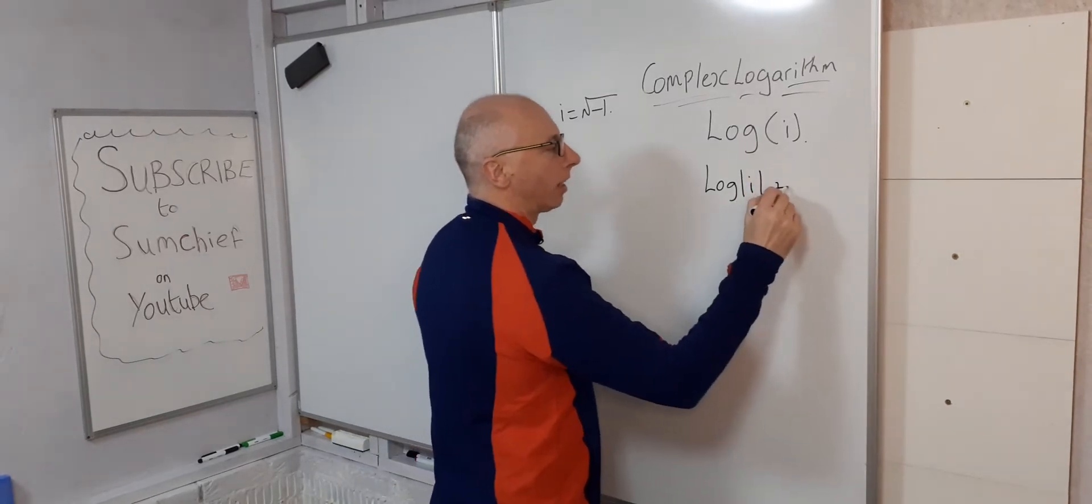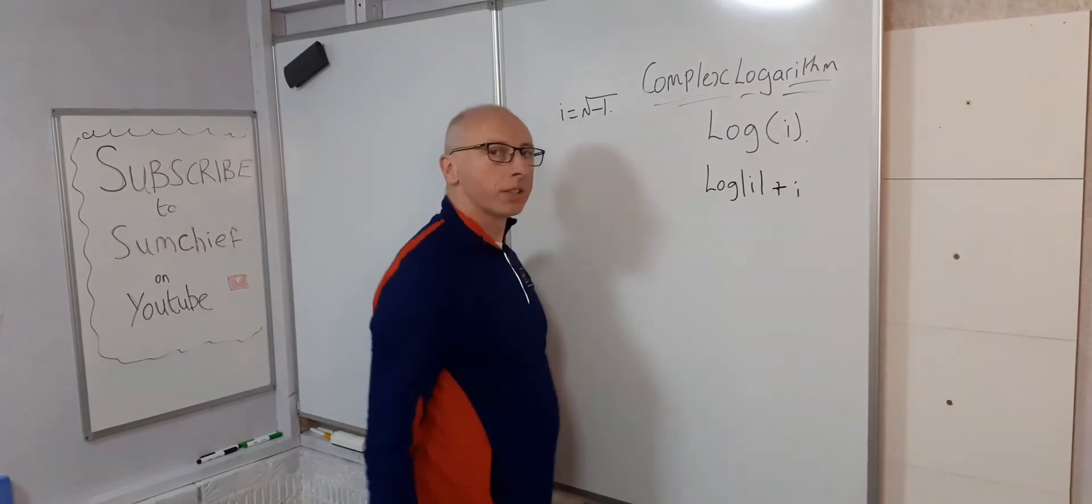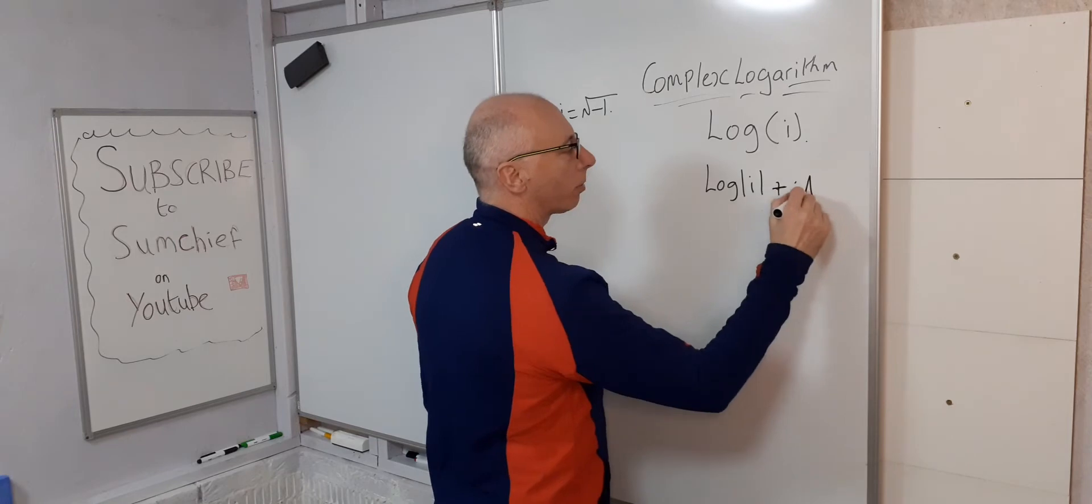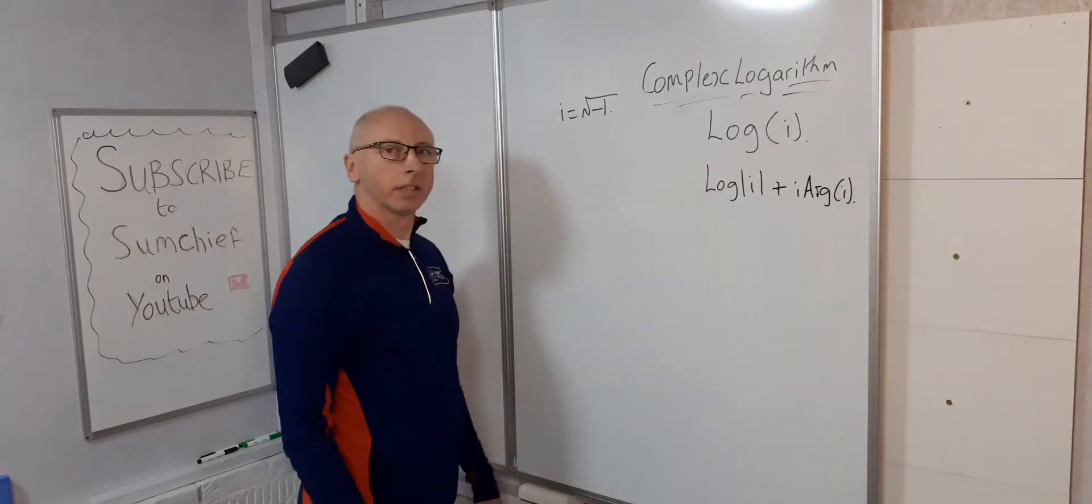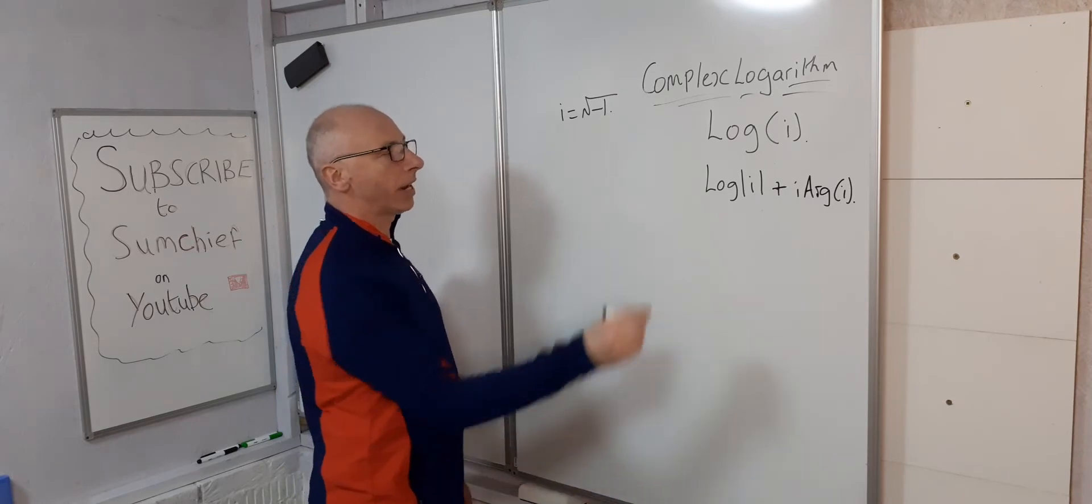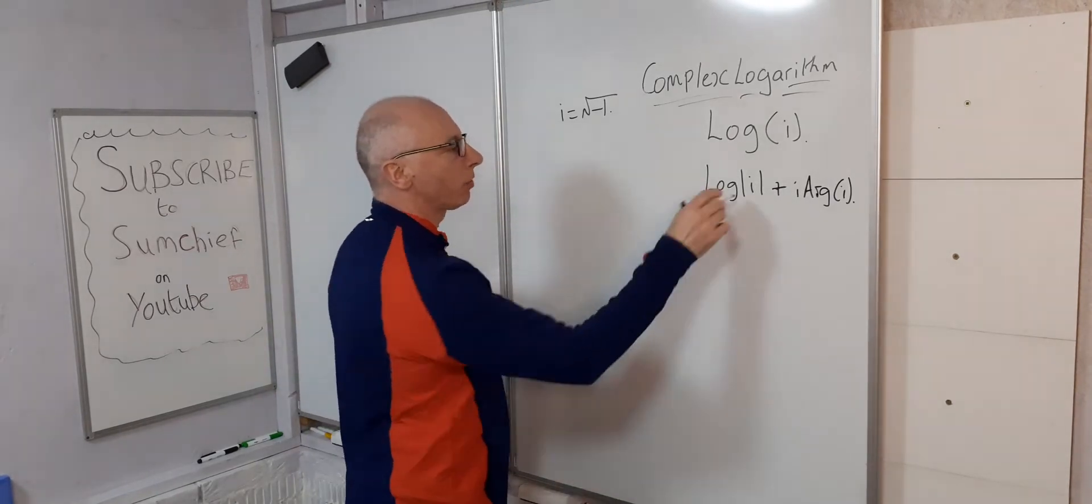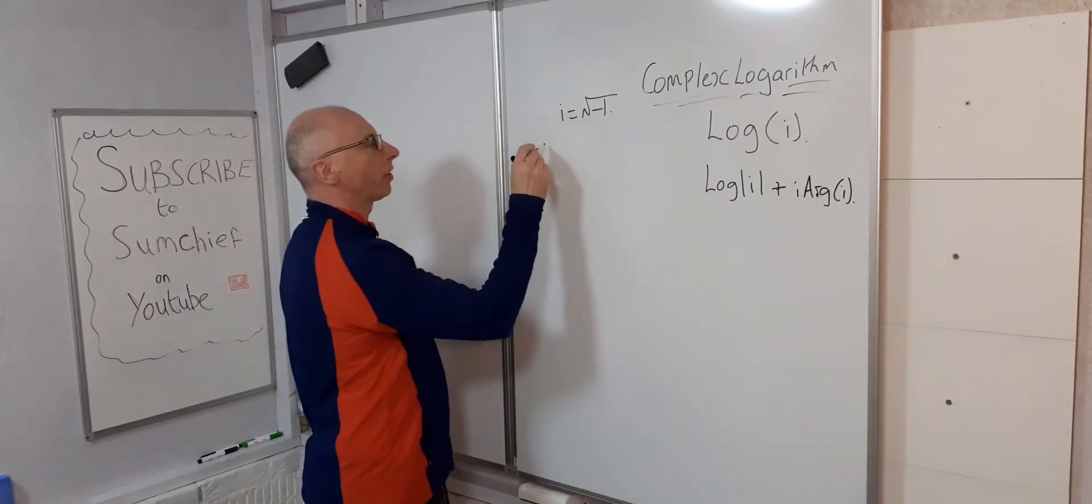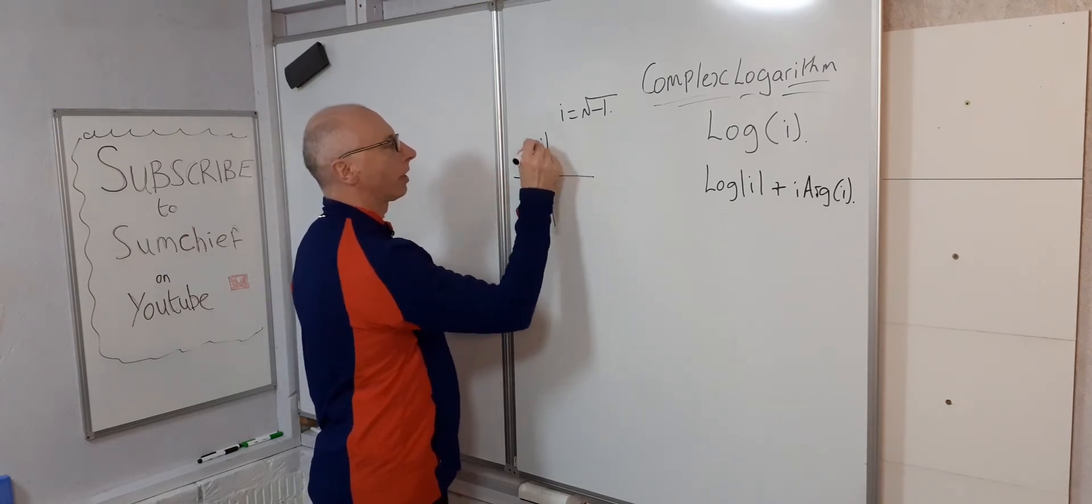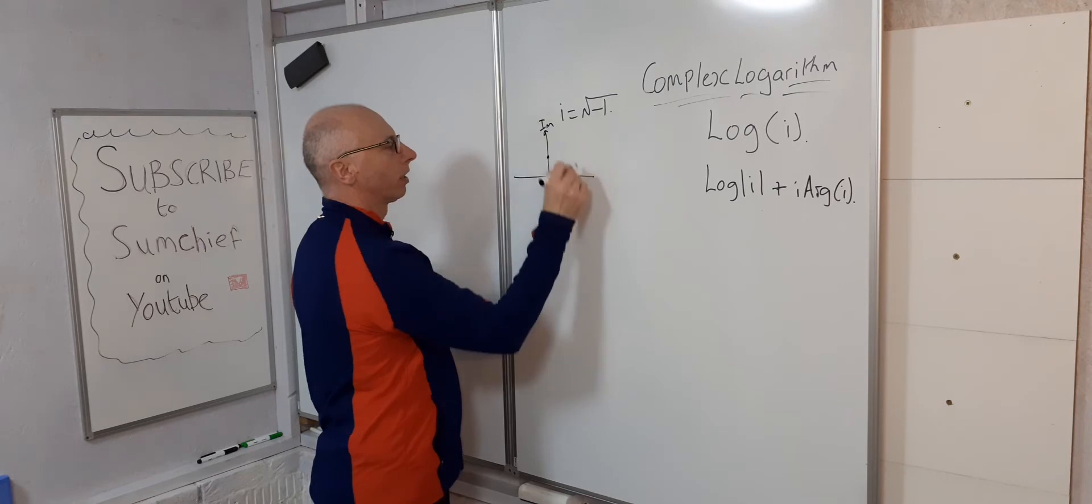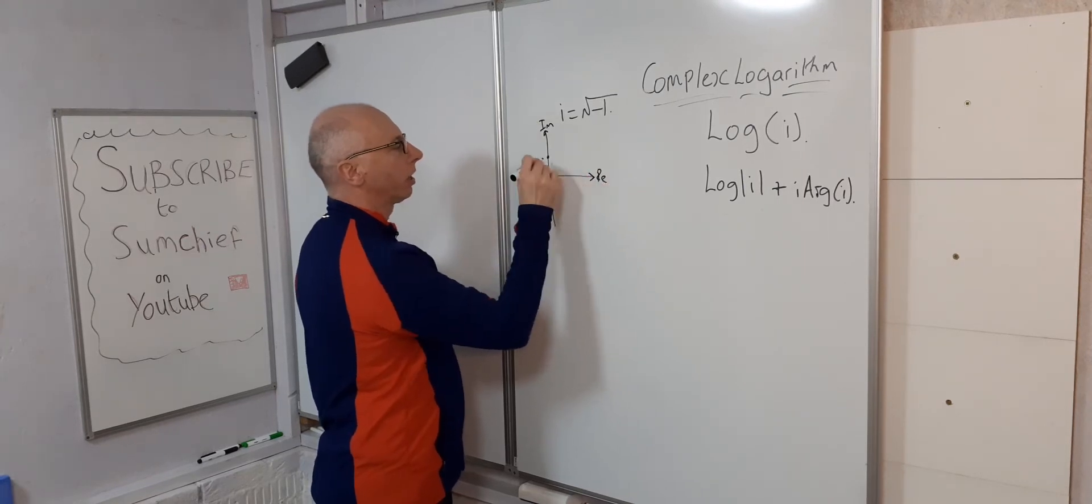And then add i times the argument of i. Okay, so now, what's the absolute value of i? So we're going to draw it on the graph as i. Imaginary and real. And that's one.